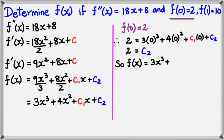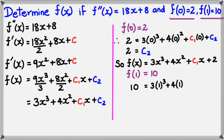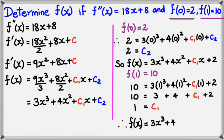So, now I've figured out what c2 is. f of x is 3x cubed plus 4x squared plus c1x plus 2. Now, I use the second point that I've been given, which is f of 1 is equal to 10. So, f of 1 is equal to 10, which means 10 is equal to 3 times 1 cubed plus 4 times 1 squared plus c1 times 1 plus 2. Now, rearranging everything here, I'm going to get 10 is equal to 3 plus 4 plus c1 plus 2, which means c1 is equal to 1. And now, I've figured out what my original function was. My original function is 3x cubed plus 4x squared plus 1x plus 2.